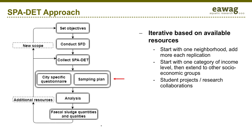Then you need to conduct the study. As scientists, we would like to say you must have enough samples to be statistically significant. However, in reality, resources are often limited. That is why we developed an iterative approach: as more resources become available and you collect more data, you can improve the quality of your estimations. For example, you could start with one neighborhood and then include additional neighborhoods in the next round, or start with one income category and extend to additional socioeconomic groups. You could also work together with a local university to include student research projects in your quantities and qualities study.